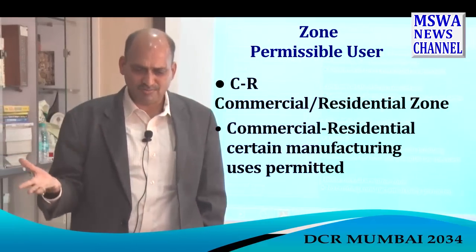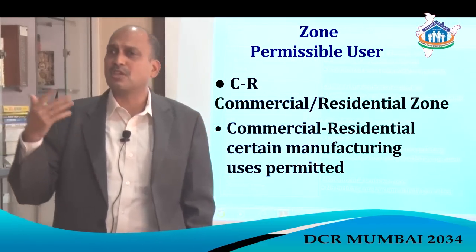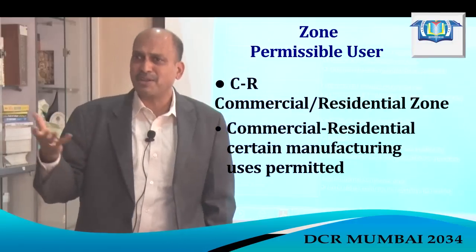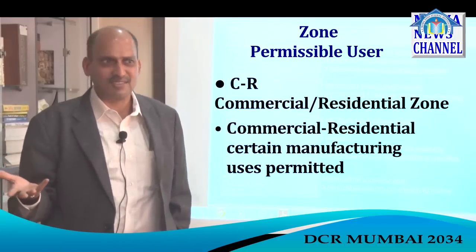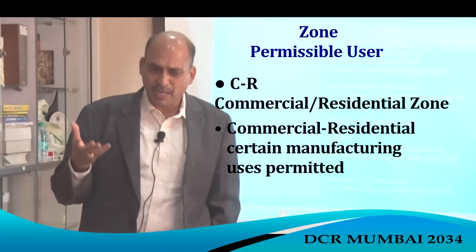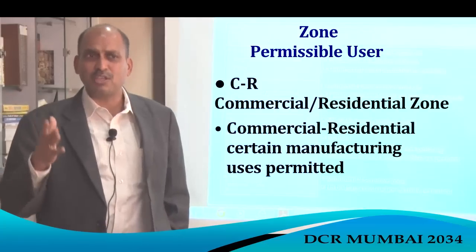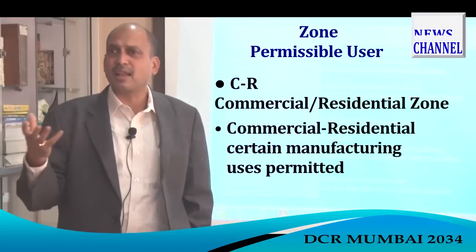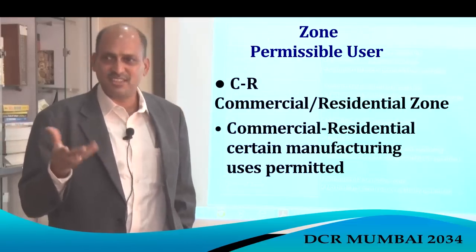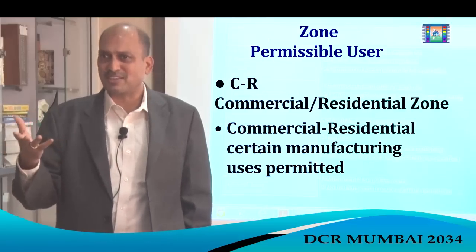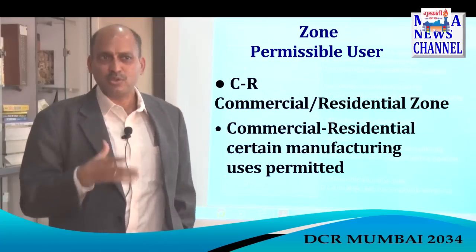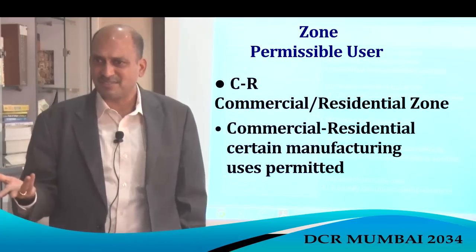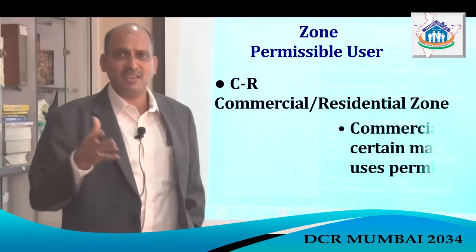In the CR zone — Commercial Residential — certain manufacturing uses are also permitted, like die making, small offices with manufacturing activity, printing press, jewellery making, diamond cutting, shoemaking, tailoring, and ready-made garments. These small-scale manufacturing and service activities are permitted in the commercial zone, not just shop offices.